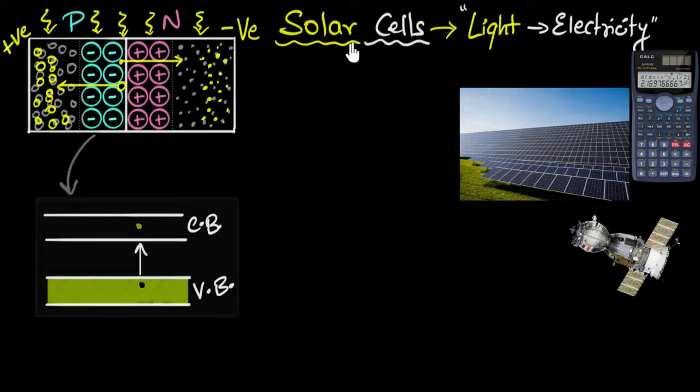And this is how in solar cells we use light to generate voltage. And that's what we call the photovoltaic effect. Let me write that down. This is what we call photovoltaic effect. The name makes sense, right? We're using photons to generate voltage. Photovoltaic effect.